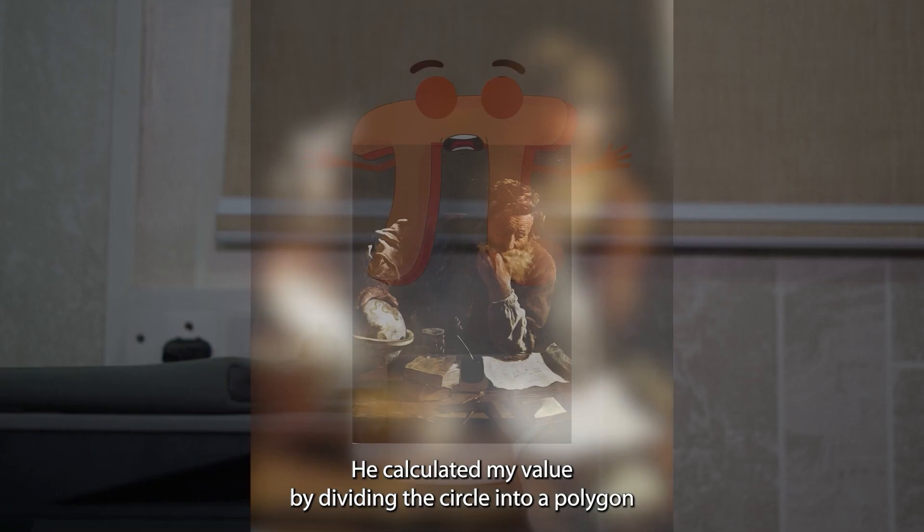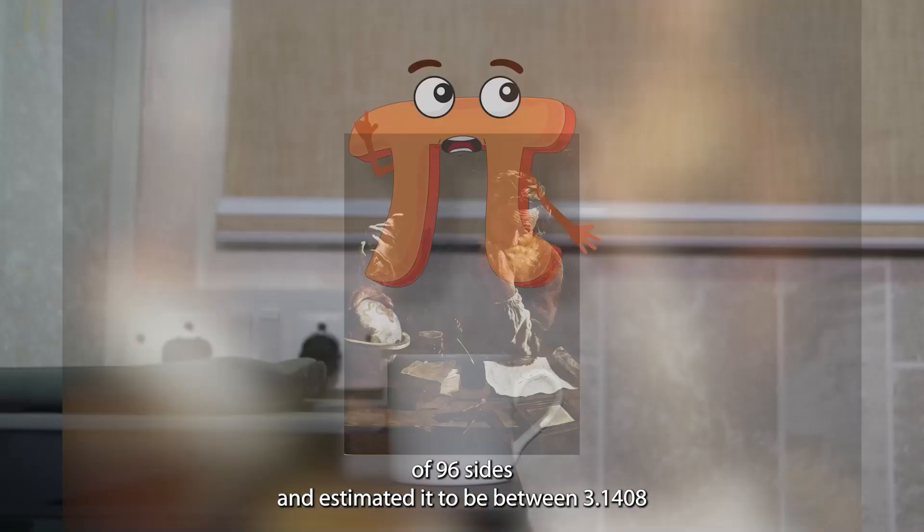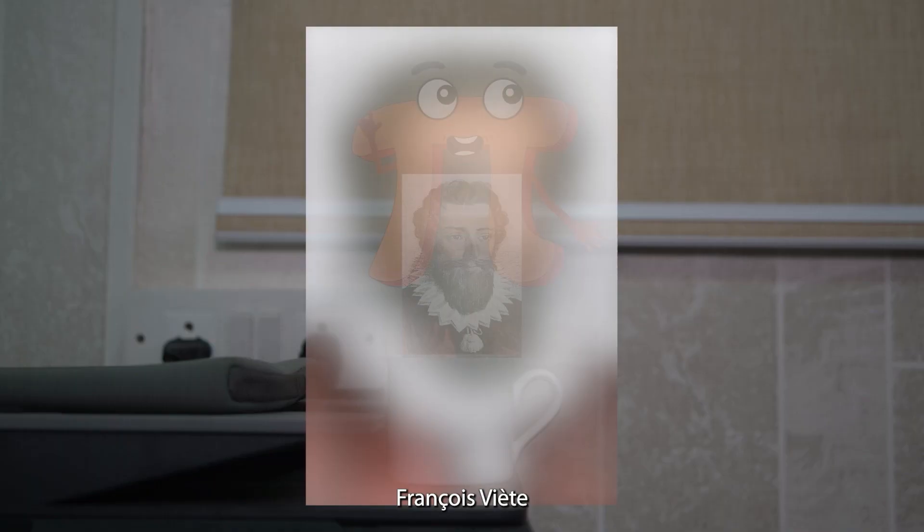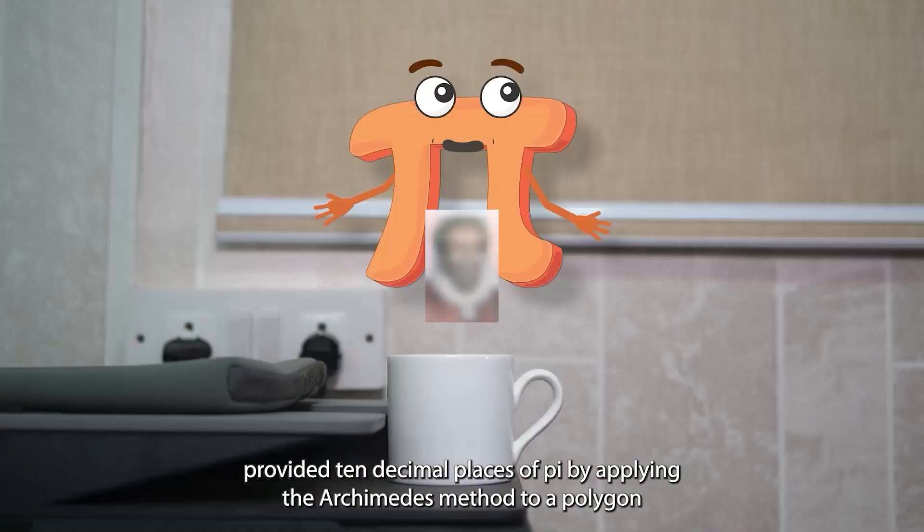He calculated my value by dividing the circle into a polygon of 96 sides and estimated it to be between 3.1408 and 3.1429. François Viète provided 10 decimal places of pi by applying the Archimedes method to a polygon with 393,216 sides.